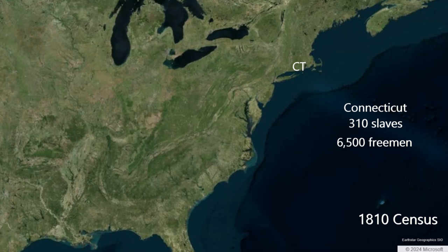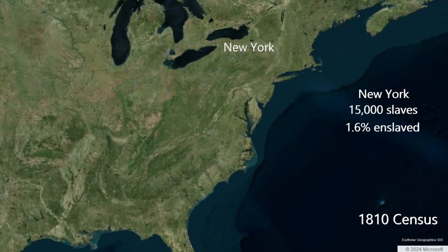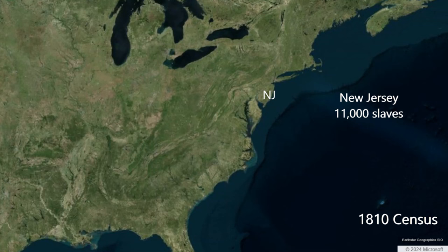New York State had 15,000 slaves in 1810, or 1.6% of the population. The presence of 15,000 slaves in New York State is a 25% reduction in slavery since the previous census. New York still has a larger number of free African Americans than slaves, with 25,000 freemen. New Jersey had nearly 11,000 slaves in 1810, or about 4% of the population. There were 7,900 freemen in New Jersey. The 1810 census is the last census that New Jersey will have more slaves than free African Americans.